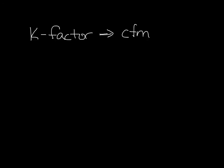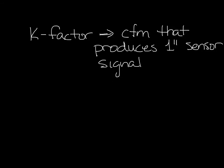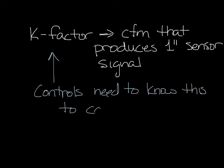The K-Factor is the CFM that will produce a 1-inch sensor signal with that flow sensor at the pressure transducer. This CFM is different for different sensor designs and different sizes. So for the controls on the VAV box to calculate what the airflow going through the box is, it needs to know what the K-Factor of the box is. These K-Factors are entered when the box controls are programmed.